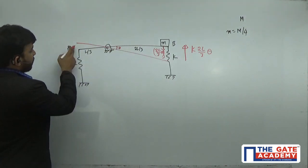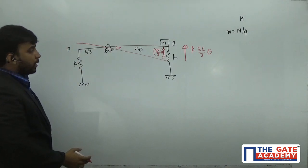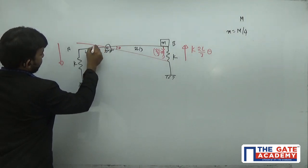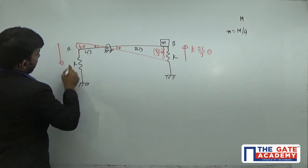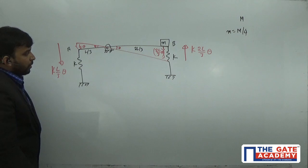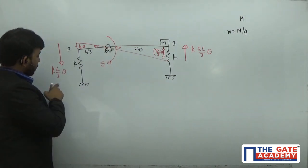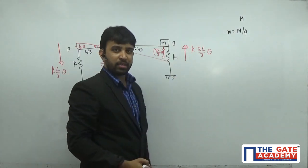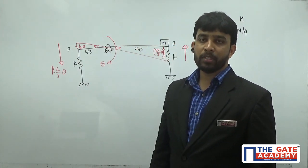On the other side, the spring is stretched. It tries to pull the rod back. The displacement there is L/3 times θ, so the spring force is K·(L/3)·θ in the downward direction. Due to these two spring forces, there is an unbalanced couple that tries to restore the rod to its original position.